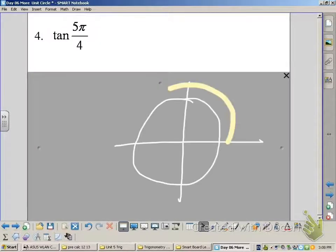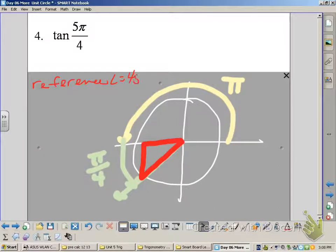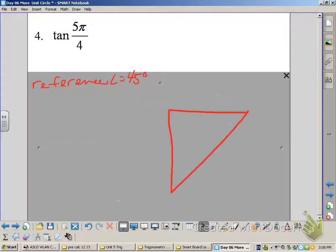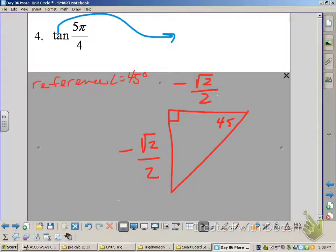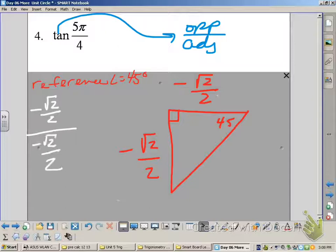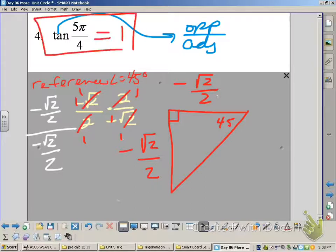Here is the next problem. Tangent of 5π over 4. We have to go beyond π, another quarter π, which gives us a 45 degree reference angle. So as we look at our 45, 45, 90 triangle, remember with a radius of 1, our sides are going to be root 2 over 2. They're both negative because we're in the third quadrant, and tangent is opposite over adjacent. So when we divide our fraction, our negatives are going to divide out. In fact, everything divides out, and we get 1 for our answer.